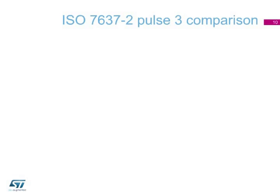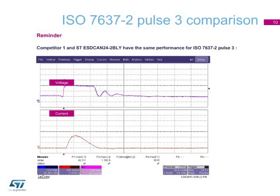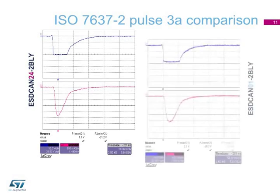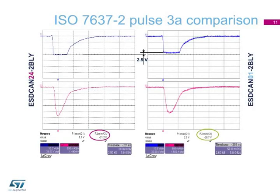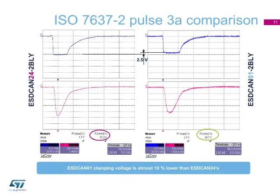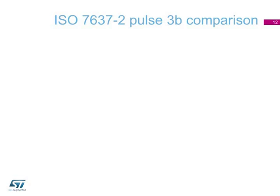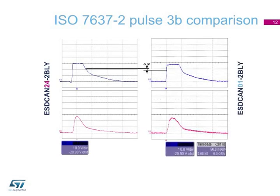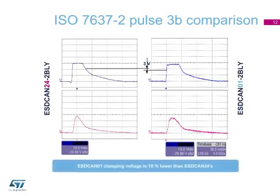This is a comparison between competitor 1 and ST's old ESD CAN 24, showing similar behavior when subjected to ISO 7637-2 Pulse 3. The curves are the same for both products, confirming the TLP test — both devices are similar. During ISO 7637-2 Pulse 3A, the clamping voltage is reduced by 8%, from 31.2 to 28.7 volts, with the ESD CAN 01 having the lowest clamping voltage. During ISO 7637-2 Pulse 3B, the clamping voltage is also reduced by 3 volts; again, the ESD CAN 01 has the lowest clamping voltage.